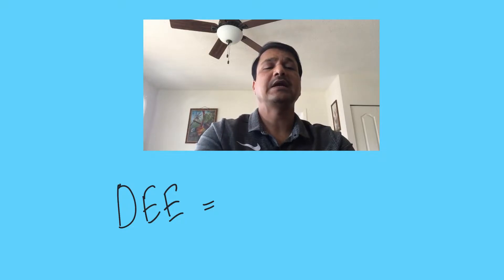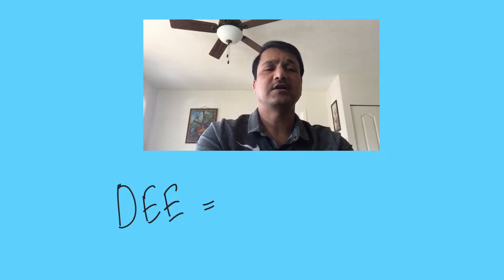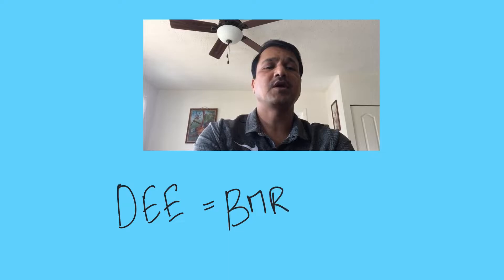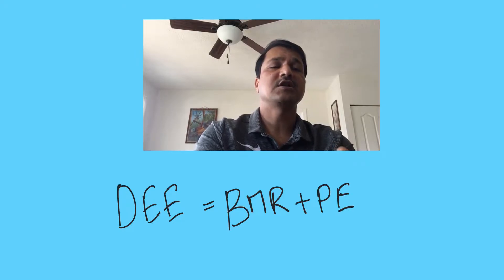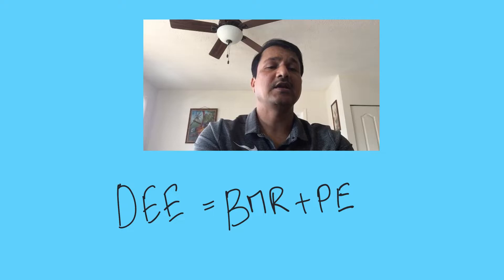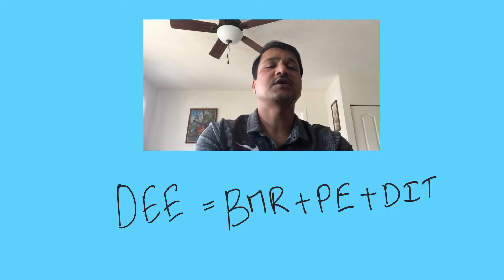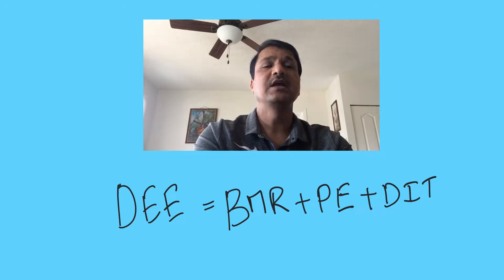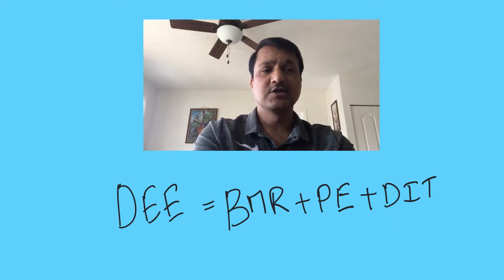How to calculate the daily energy expenditure? The daily energy expenditure is the combination of BMR — that is basal metabolic rate — and the amount of energy needed for physical activity or physical exercise, plus diet induced thermogenesis, which includes digestion, absorption, transport, and storage of the food that we take in. All this together contributes to daily energy expenditure.